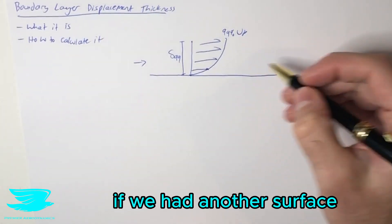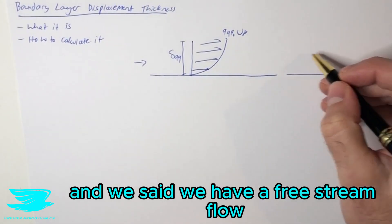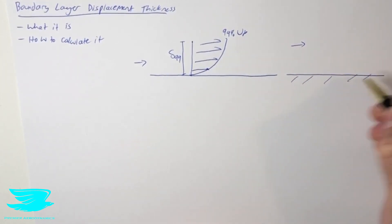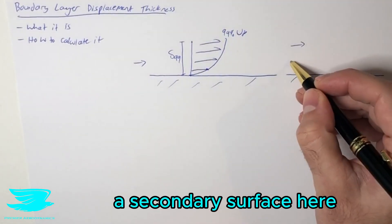So in other words, if we had another surface, and we said we have a freestream velocity, and there is now a secondary surface here, an imaginary surface,